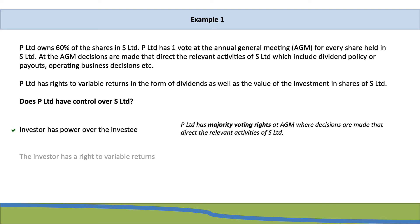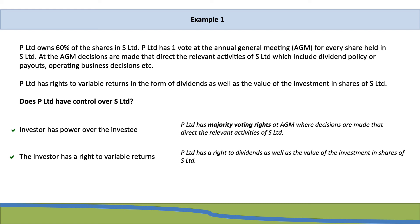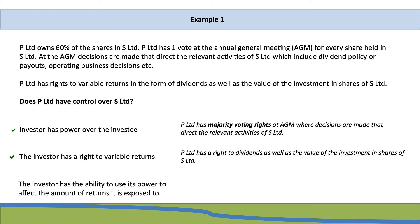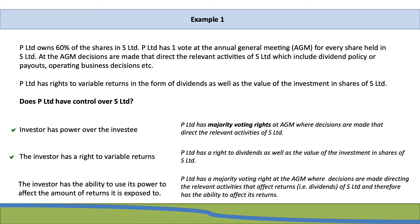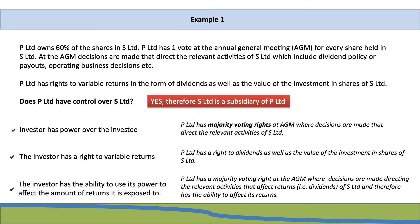For the second requirement — does the investor have the right to variable returns? Since P Limited has rights to dividends and the value of the investment in shares of S Limited, it does have a right to variable returns. For the third requirement — does the investor have the ability to use its power to affect returns? P Limited has majority voting rights at the AGM where decisions directing relevant activities, including the dividend policy and payouts of S Limited, are made. All three requirements are met, so P Limited controls S Limited, making S Limited a subsidiary of P Limited.